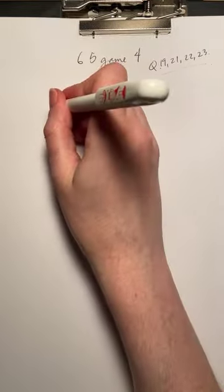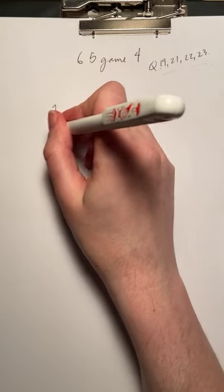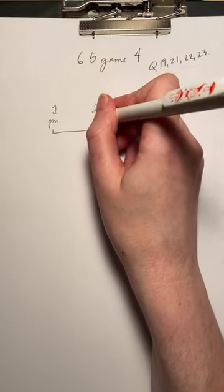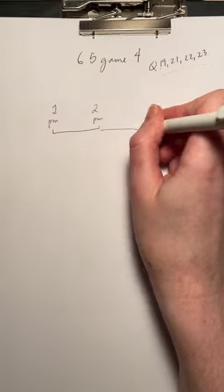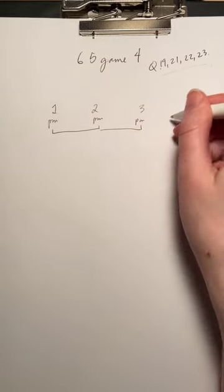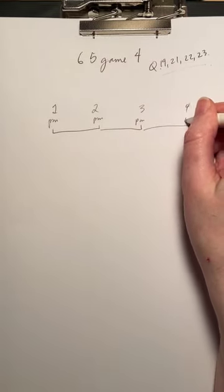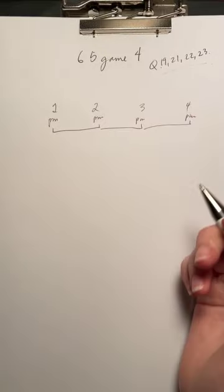Okay, so with this one we have a television programming director scheduling a three-hour block of programs beginning at 1pm. So that's 1pm, 2pm, 3pm, 4pm, maybe one, two, three hours.